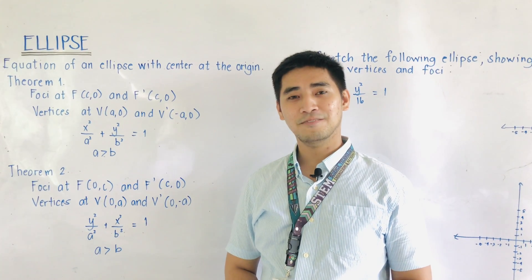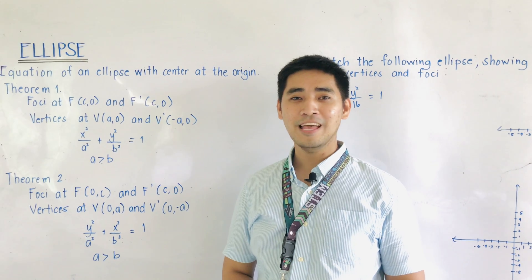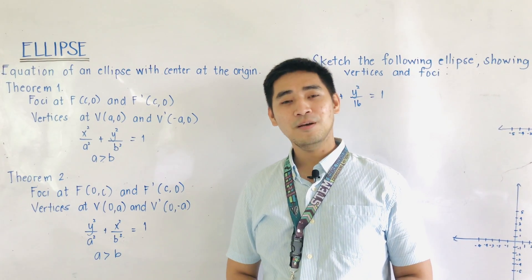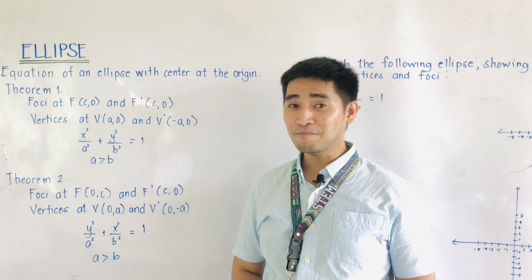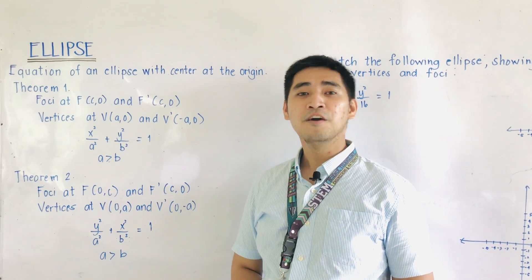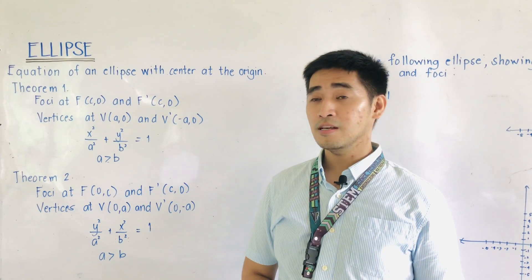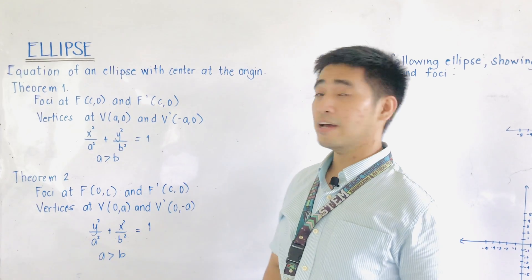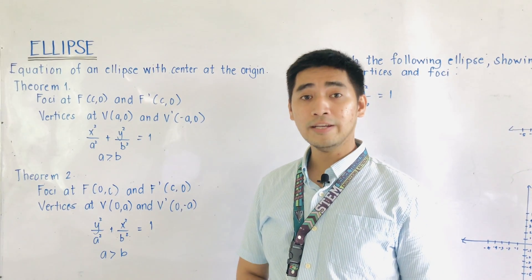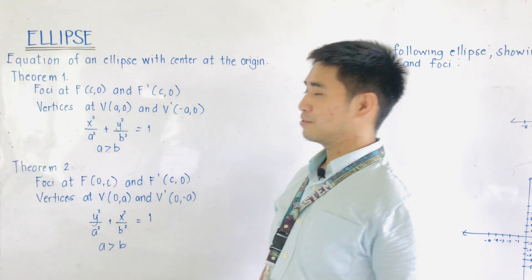Hi Judgers! Welcome to another segment of One Earlywag Memorial High School Senior High School Math TV. Last time, we were able to define an ellipse, its characteristics, and define its parts. For today, we will be discussing the different theorems involving the origin as the center of the ellipse — Theorem 1 and Theorem 2 of the equation of the ellipse.